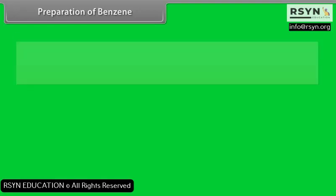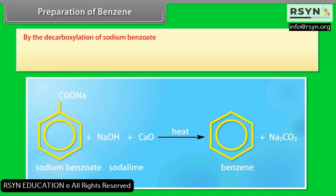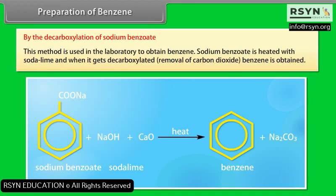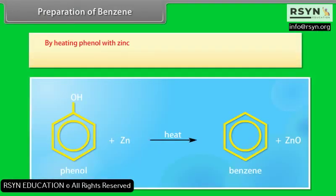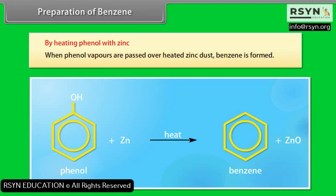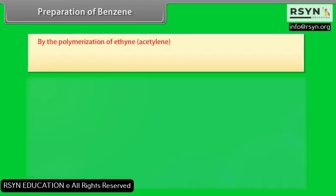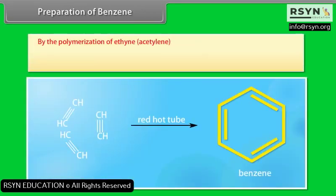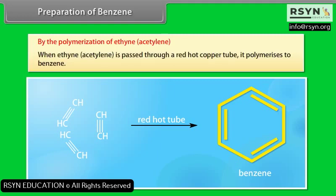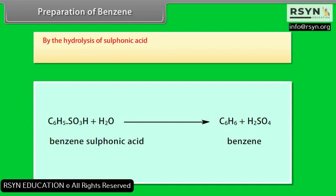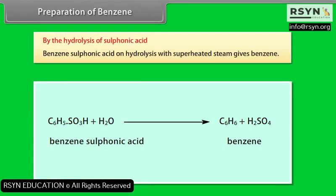Preparation of benzene. By decarboxylation of sodium benzoate: sodium benzoate is heated with soda lime and, when decarboxylated (removal of CO₂), benzene is obtained. By heating phenol with zinc: when phenol vapors are passed over heated zinc dust, benzene is formed. By polymerization of ethyne (acetylene): when ethyne is passed through a red-hot copper tube, it polymerizes to benzene. By hydrolysis of sulfonic acid: benzene sulfonic acid on hydrolysis with superheated steam gives benzene.